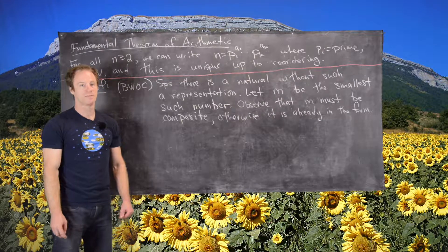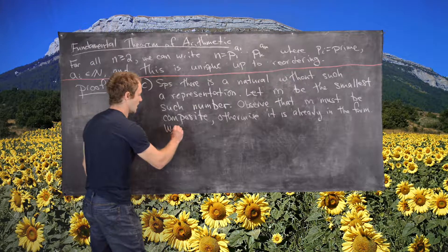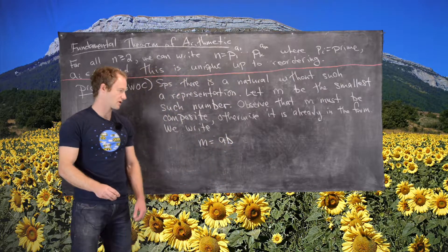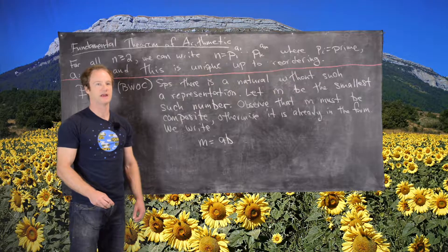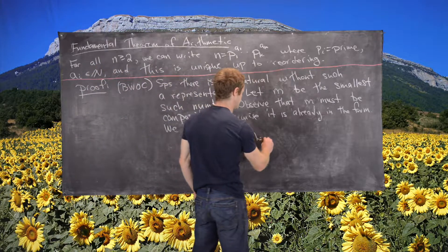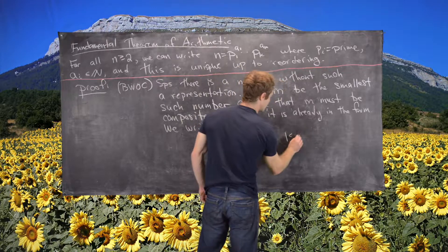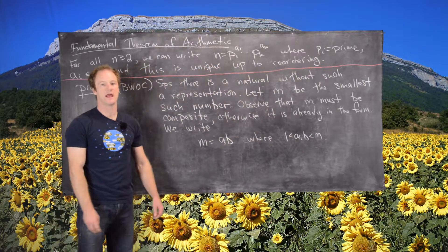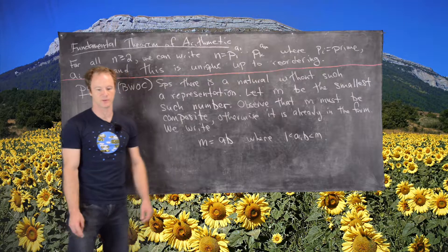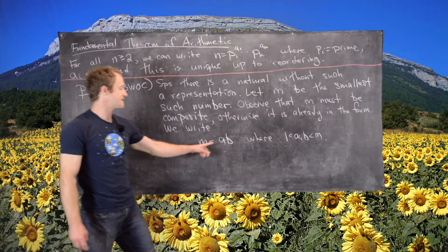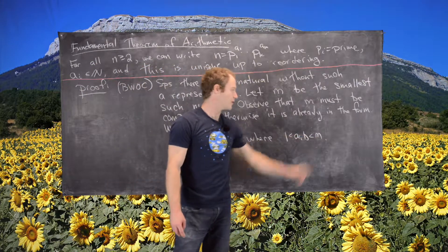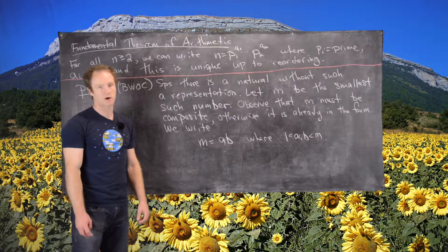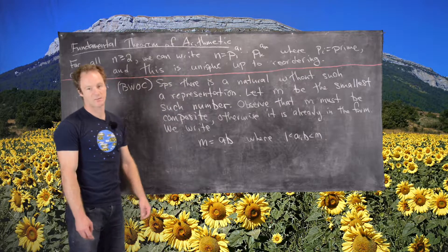Since m is composite, we can write m = a times b, where a and b are between 1 and m, not including 1 and not including m — that's the definition of a number being composite. Since a and b are both smaller than m, and m is the smallest such number, that means a and b are representable as a product of powers of primes.